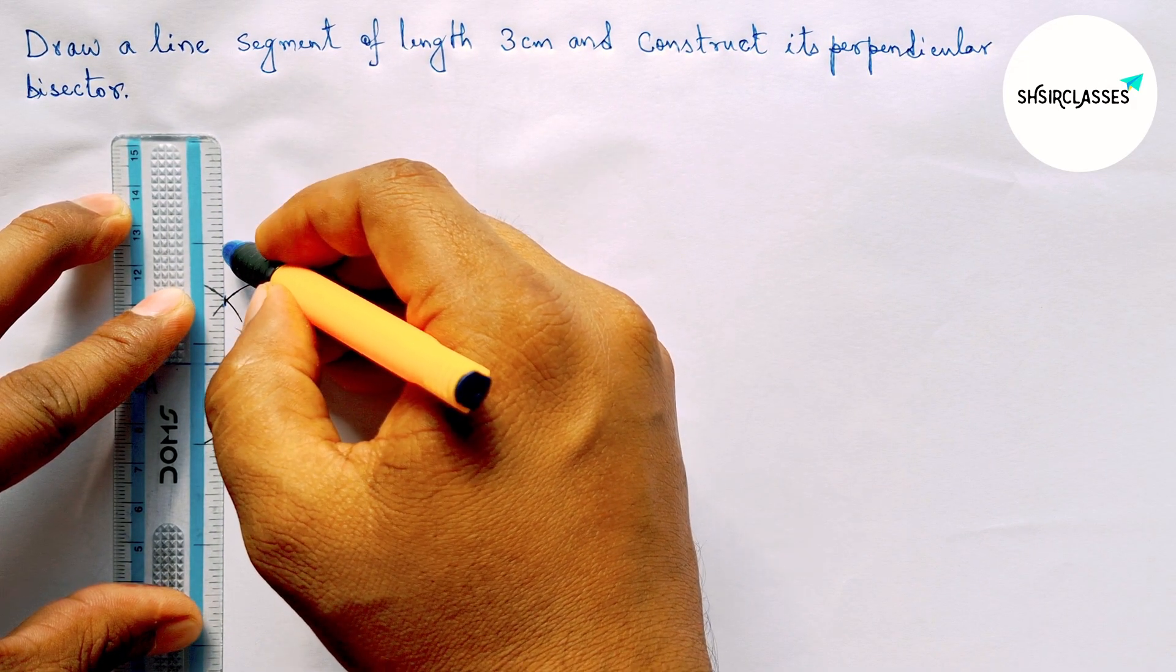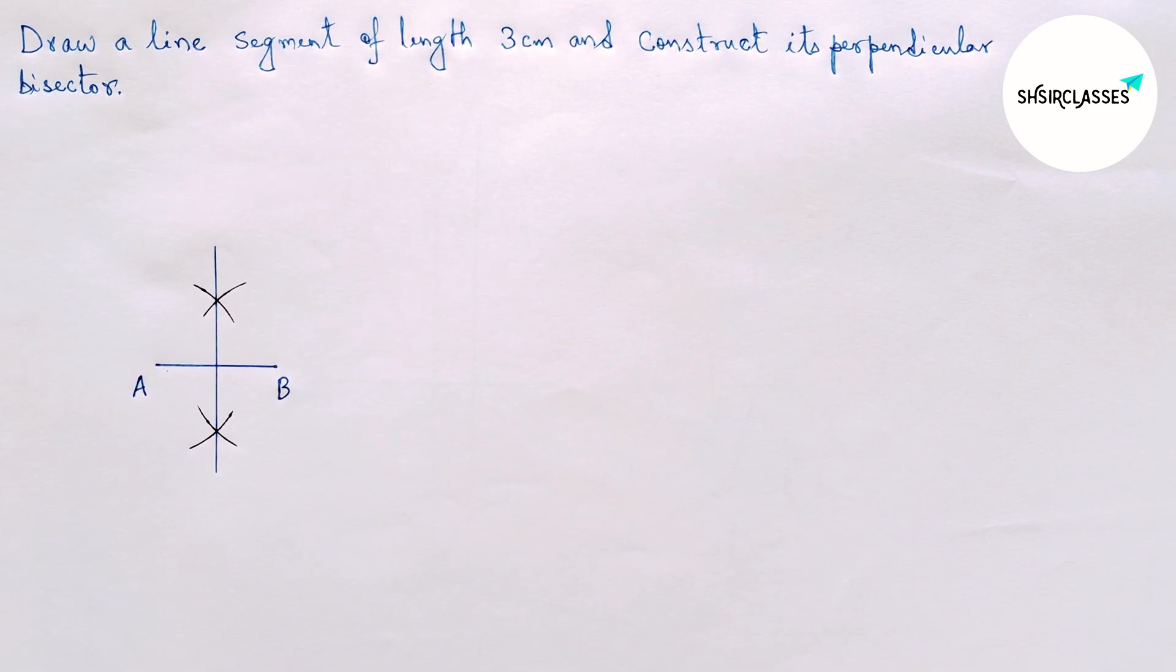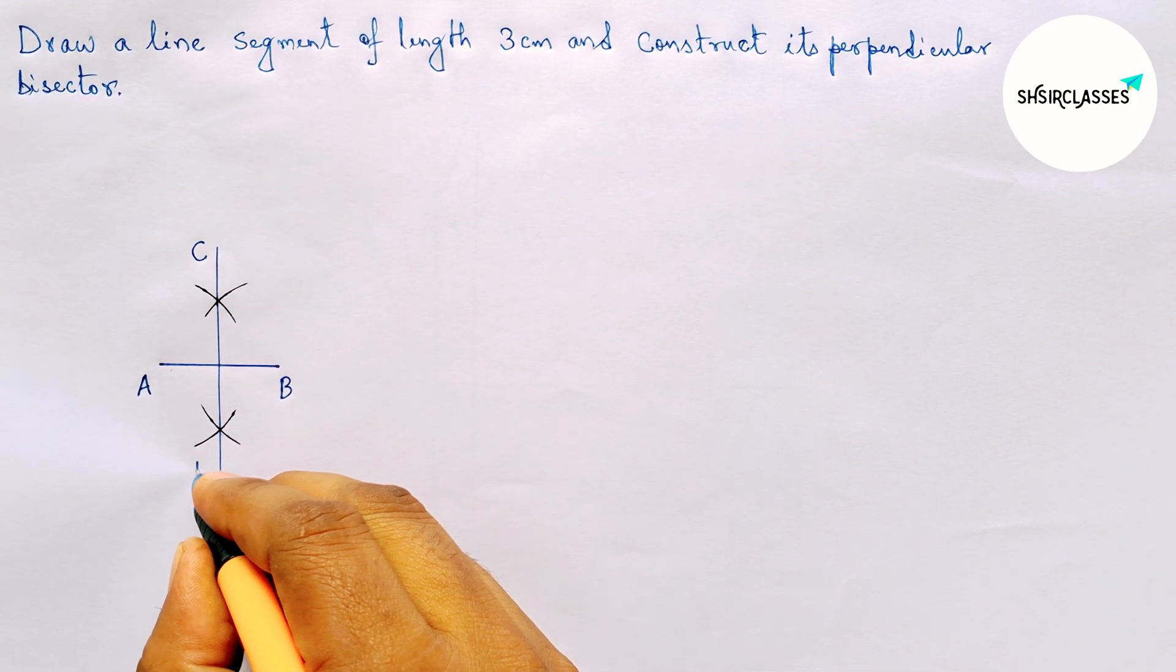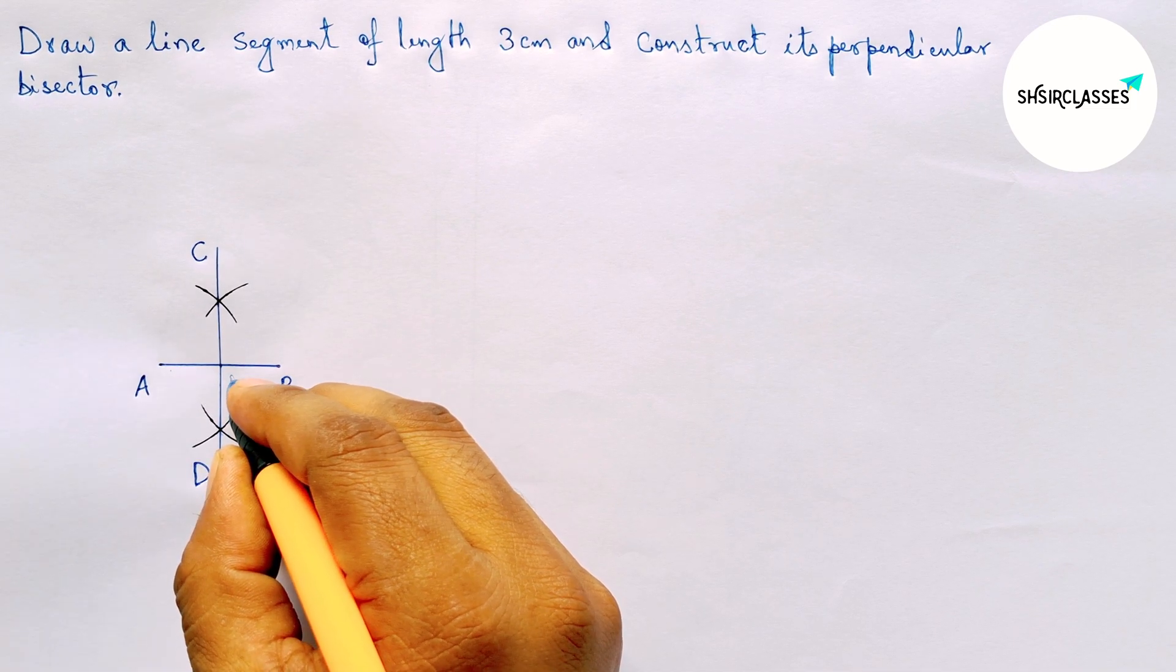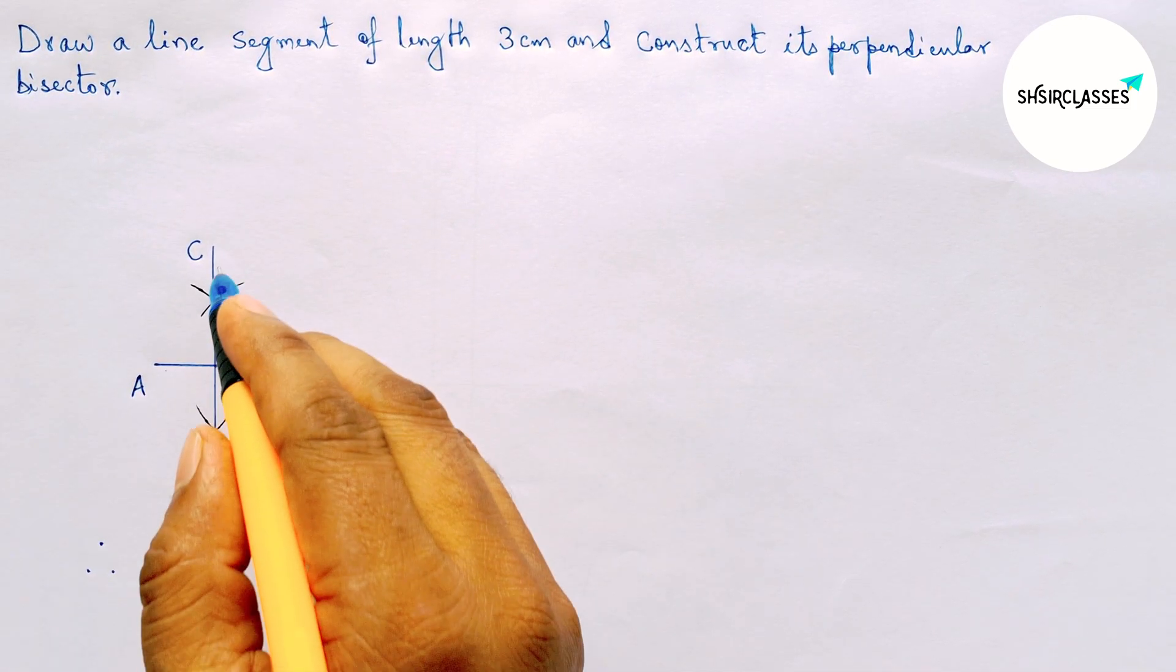Next, joining this and this is the perpendicular bisector to the line AB. Now labeling here C and D and both the line meet here at a point, so taking here point P. Now checking this, so this is perfectly bisecting the line AB.